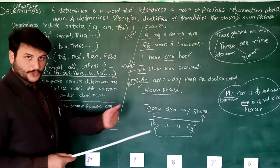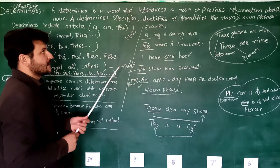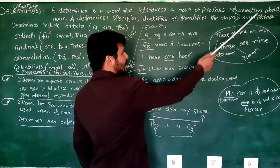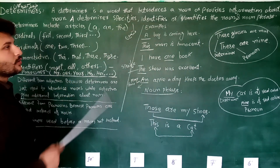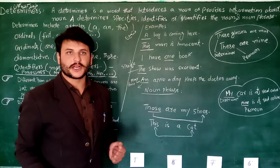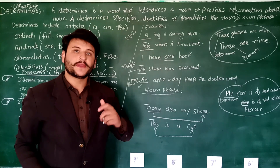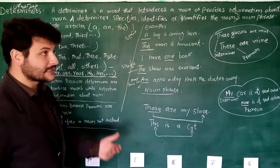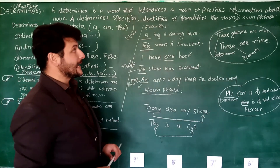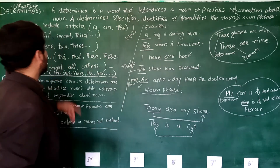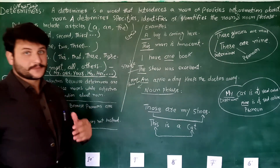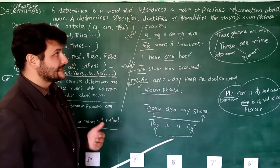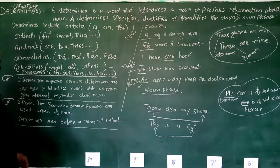A determiner is a word that introduces - jo ke taaruf karta hai, pesh karta hai - a noun, ek ism ko, aur provides - mehia karta hai, deta hai hamen - information, maloomat about noun ke baare mein. We should identify the very structure of determiner: what are determiners, what the term determiner tells us. So a determiner is a word that introduces a noun or provides information about a noun. A determiner specifies - from specification - it specifies, identifies, shanakhat, or quantifies the noun and noun phrase.